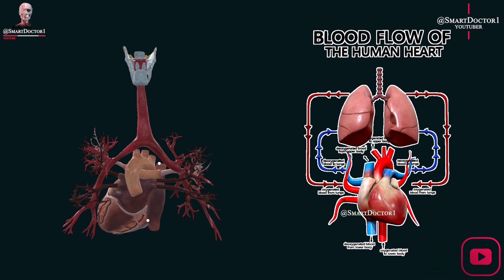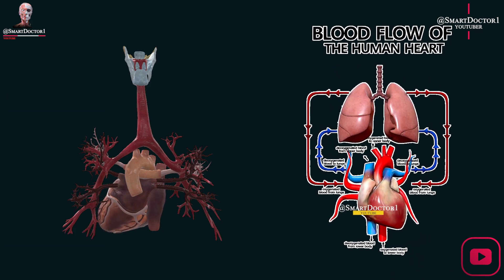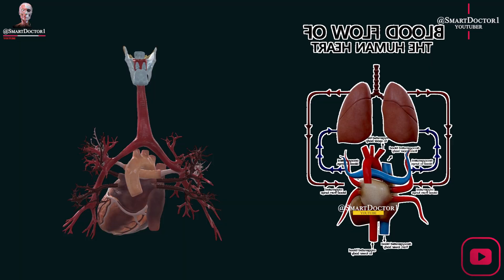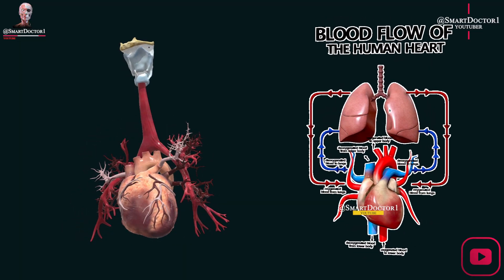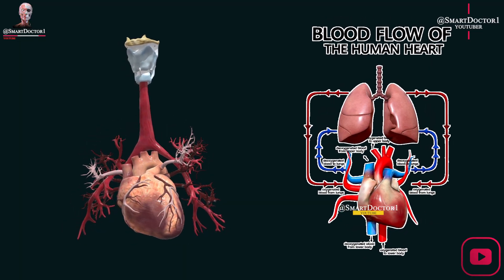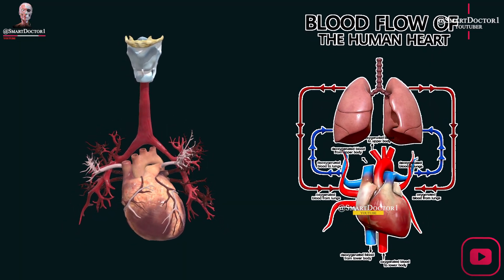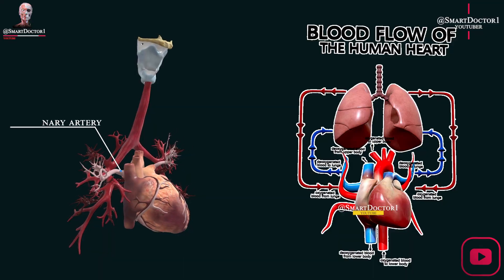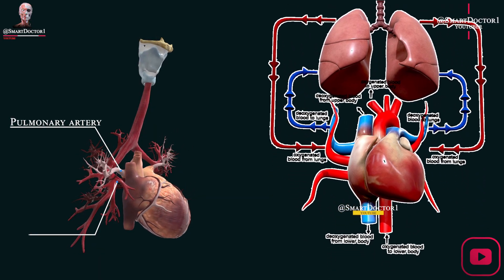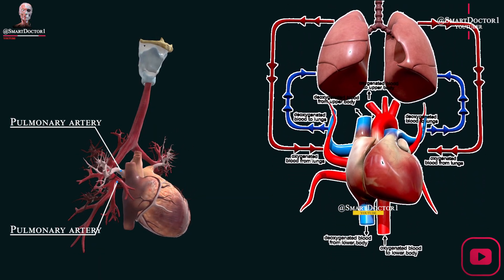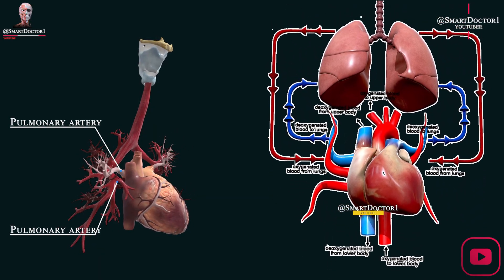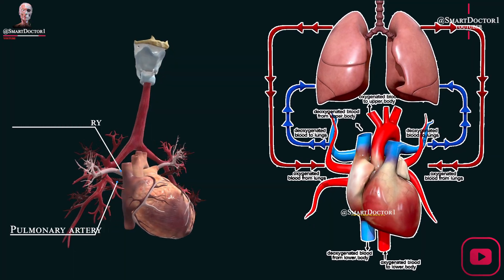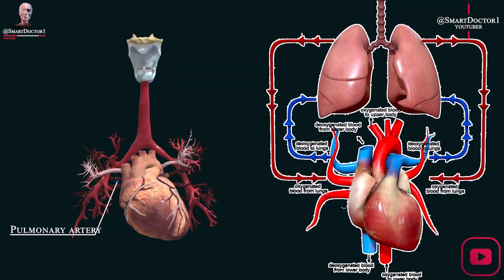Anatomy of the minor blood circulation. The minor blood circulation, or pulmonary circulation, carries deoxygenated blood from the heart to the lungs for oxygenation through the pulmonary artery. Oxygenated blood returns to the heart through the pulmonary veins that drain into the left atrium.